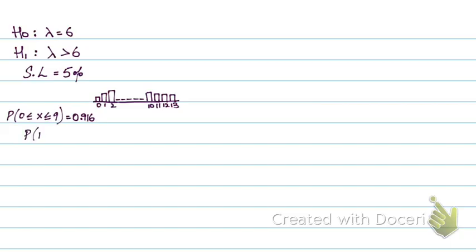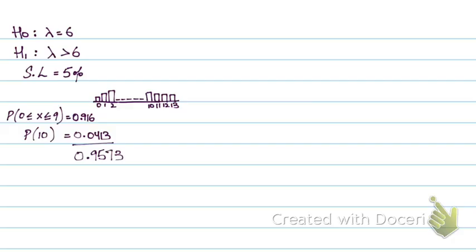So if I calculate the probability of the 10th bar, that is x equals 10, this is 0.0413. So this actually tips me over 0.95 — this will be 0.9573. So I am above 0.95, meaning from k equals 0 to 10, I cover more than 95%. So from 11 onwards, it's basically less than 5%. It's as close to the stated significance level that if I add the probability of x equals 10, it will be above 5%. So I can safely say that x equals 11 is my critical region.